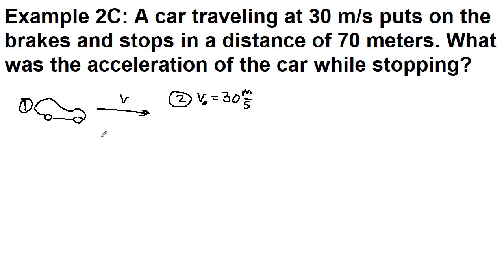We're told that it puts on the brakes, so we will have the acceleration be pointing in the opposite direction. That's how it's able to slow down. And we're told that it stops. So it stops tells us 0 meters per second is the final velocity.